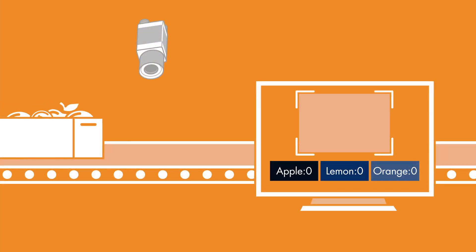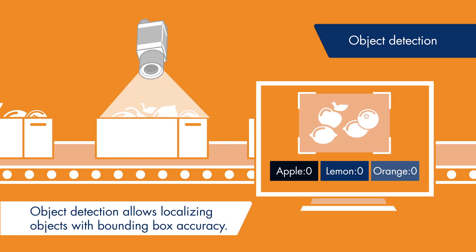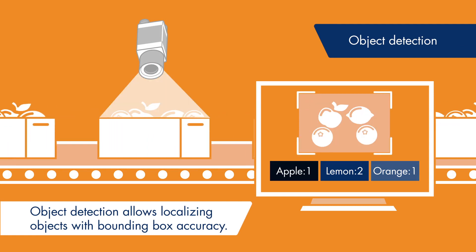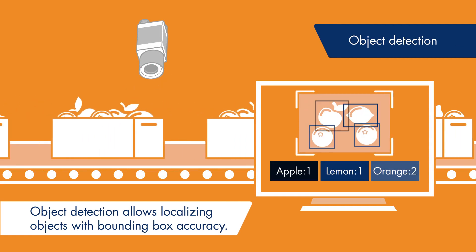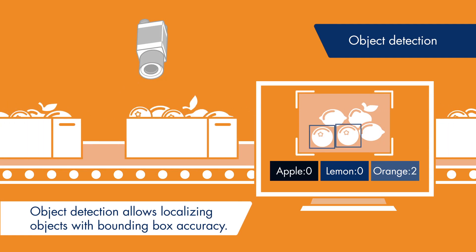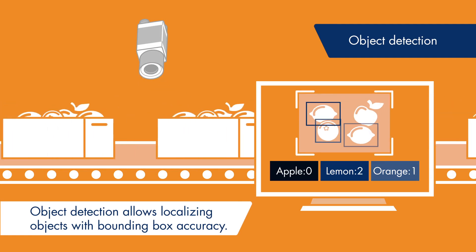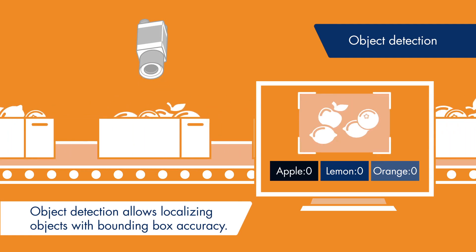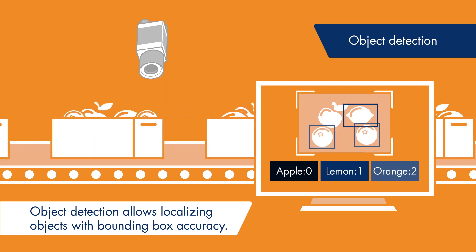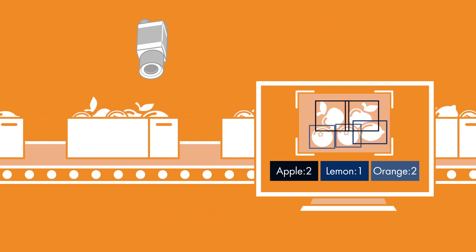Hauken's object detection localizes trained object classes and identifies them with a surrounding rectangle. Touching or partially overlapping objects are also separated, enabling object counting to, for example, verify that a customer's order has been picked and placed correctly.